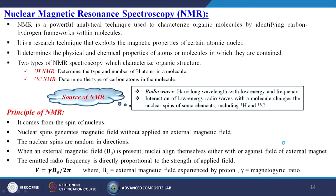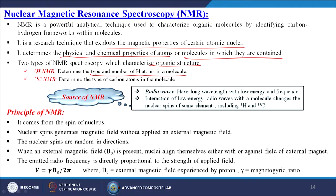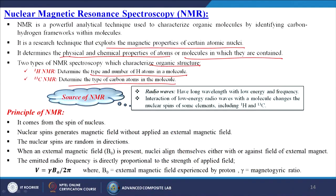NMR, nuclear magnetic resonance spectroscopy, is a powerful analytical technique used to characterize organic molecules by identifying the carbon-hydrogen frameworks within molecules. It exploits the magnetic properties of certain atomic nuclei to determine their physical and chemical properties. Two types are commonly used: 1H NMR, which determines the type and number of hydrogen atoms in a molecule, and 13C NMR, which determines the type of carbon atoms. The source is radio waves — long wavelength with low energy and frequency — whose interaction with molecules changes nuclear spins of elements including 1H and 13C.